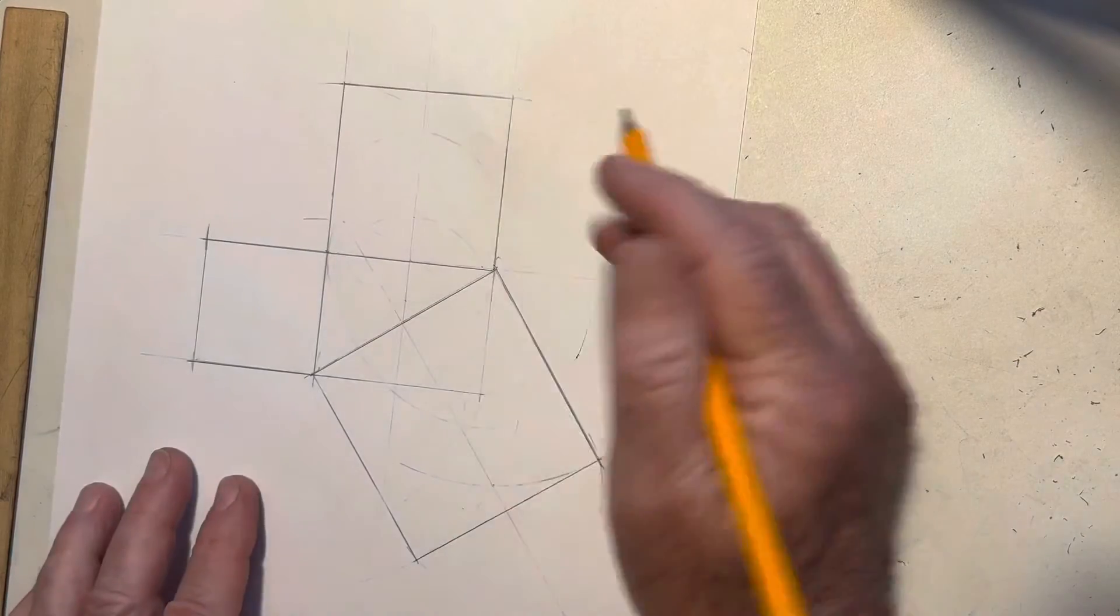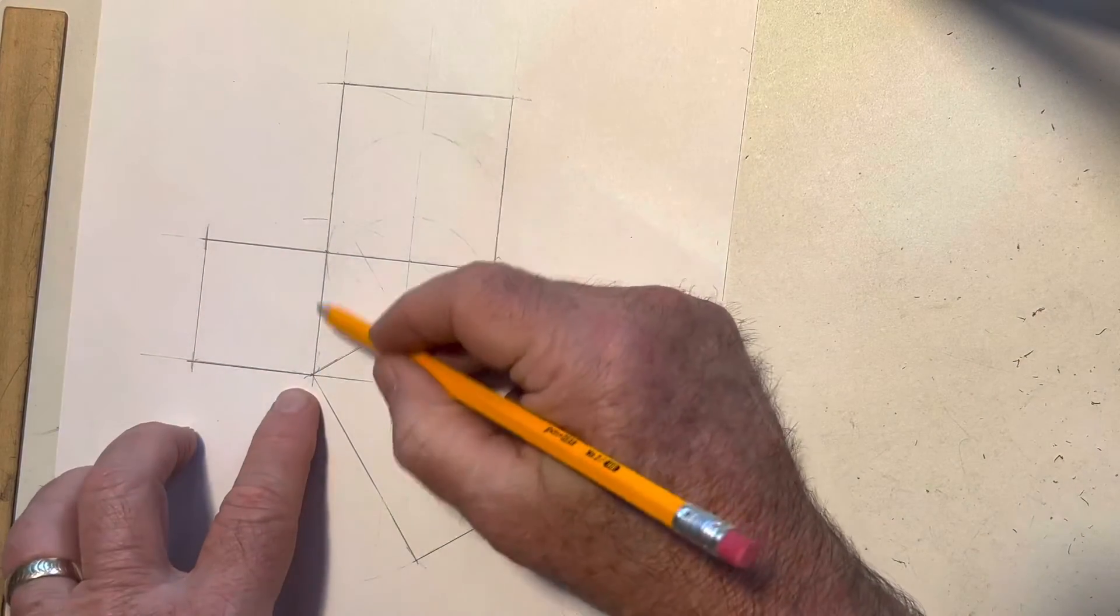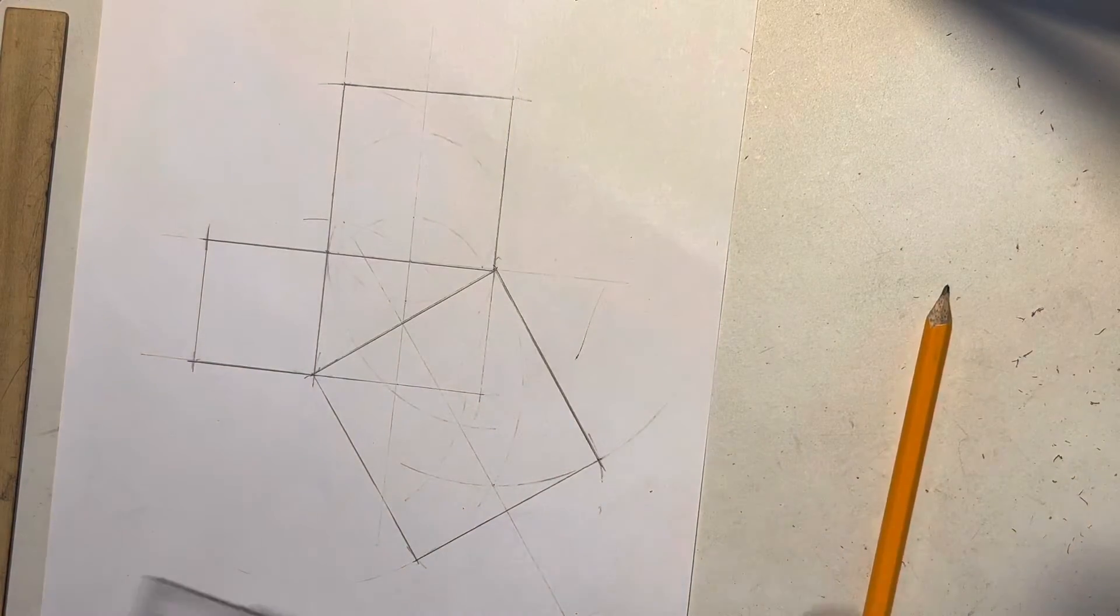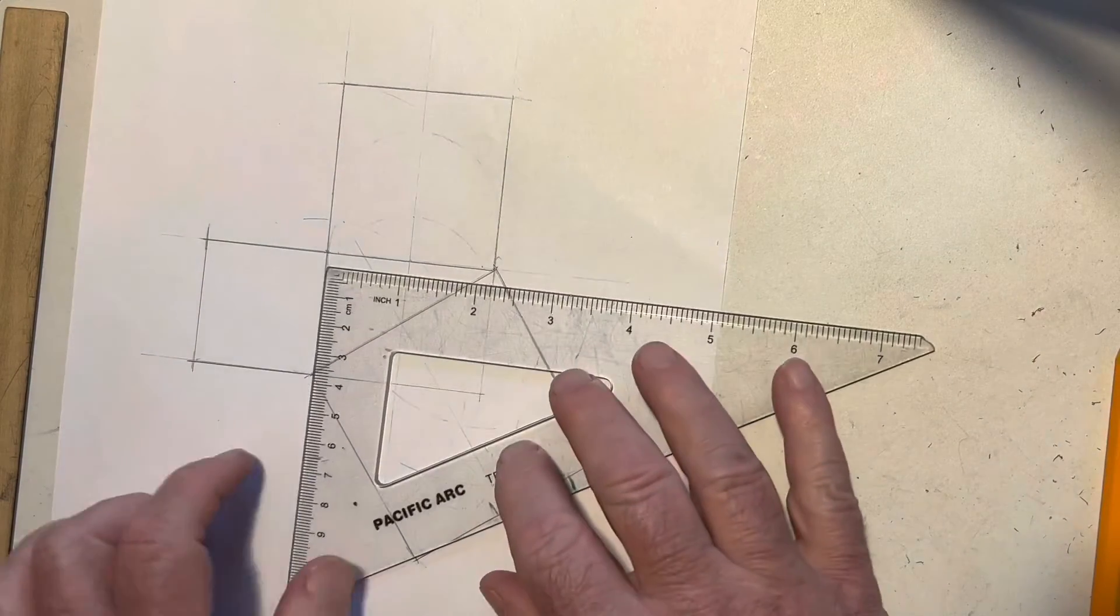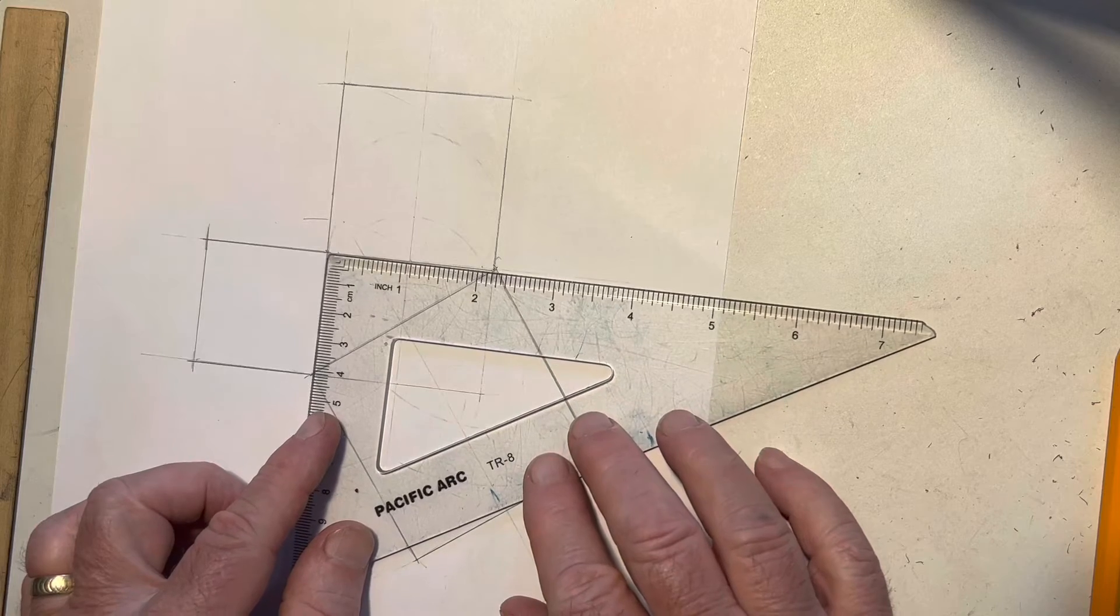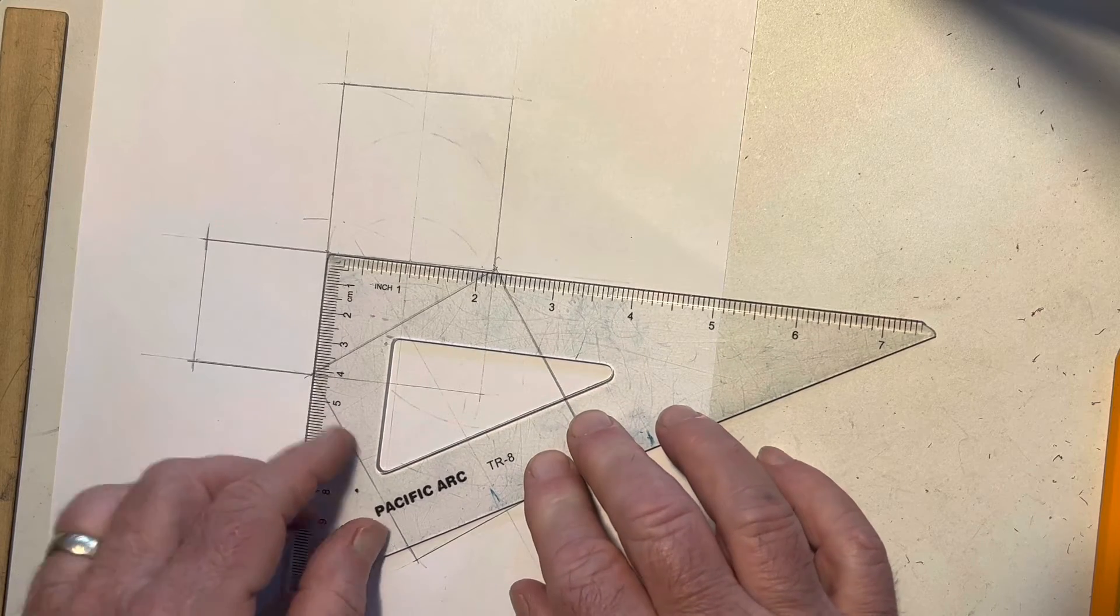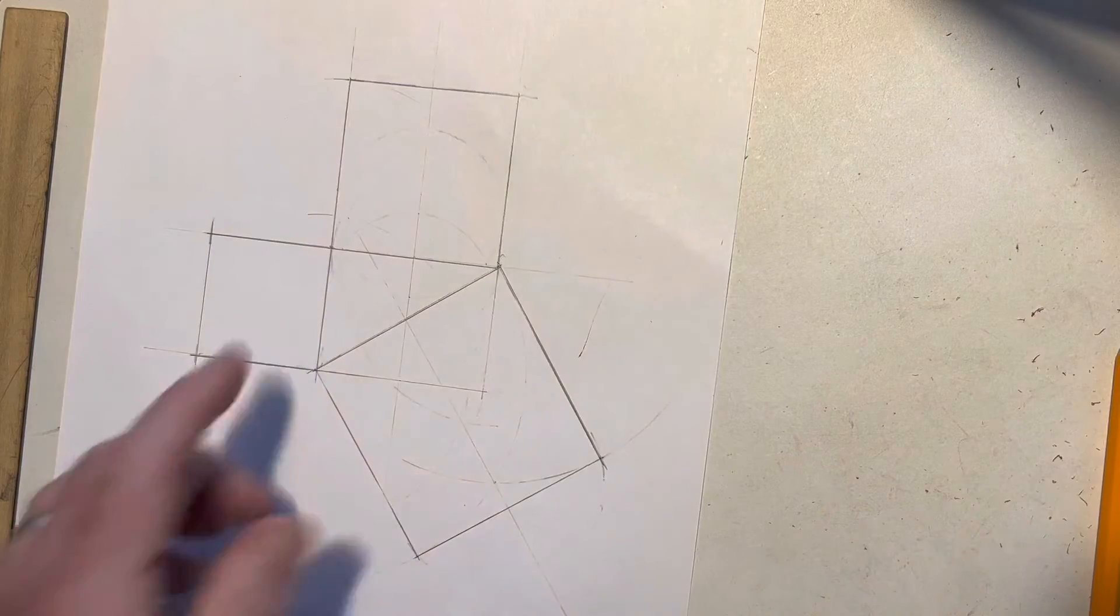So, the Pythagorean theorem - this angle right here - here's our right triangle. Let me find our triangle here to show you. This is 90 degrees. There's the right triangle. It fits perfectly in here.